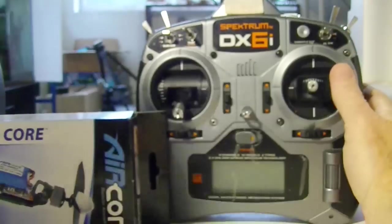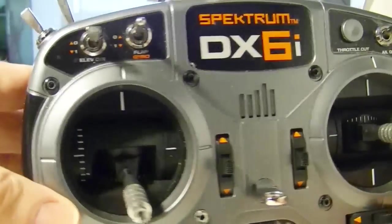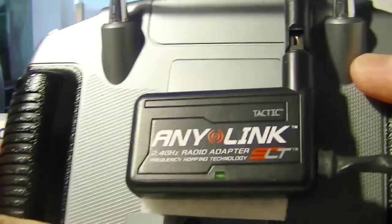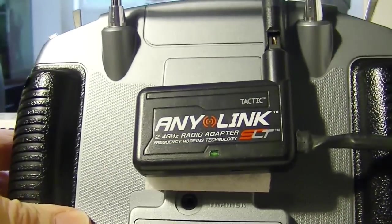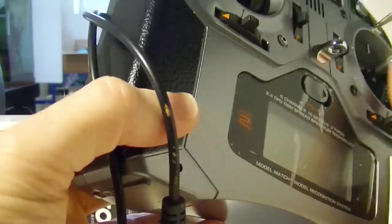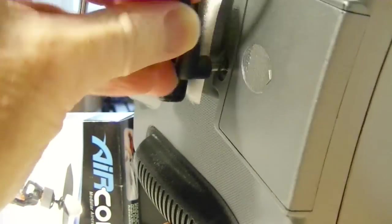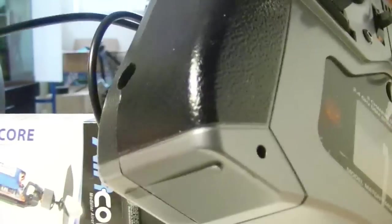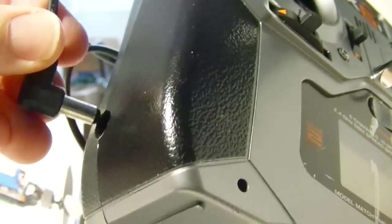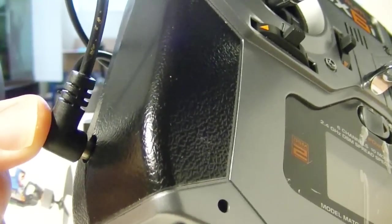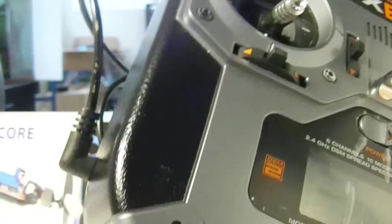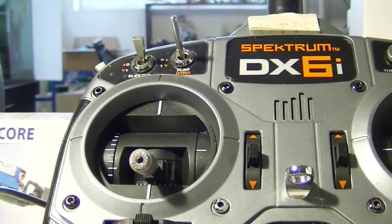I've got the Any-Link on the back of my DX6i. As typically done with Any-Link, you just plug one wire into the trainer port like that and plug the other wire where you would normally plug in the power adapter like that.